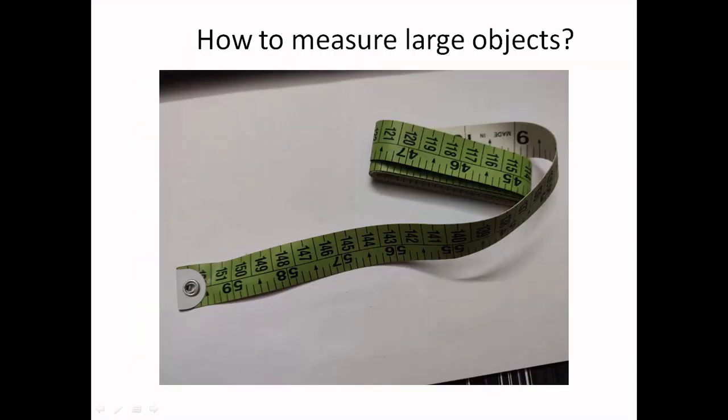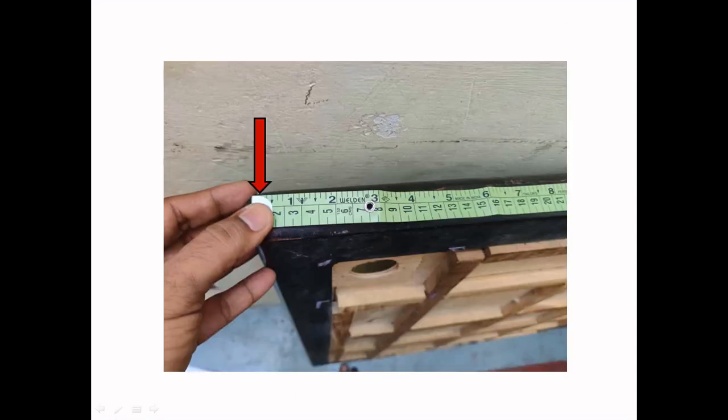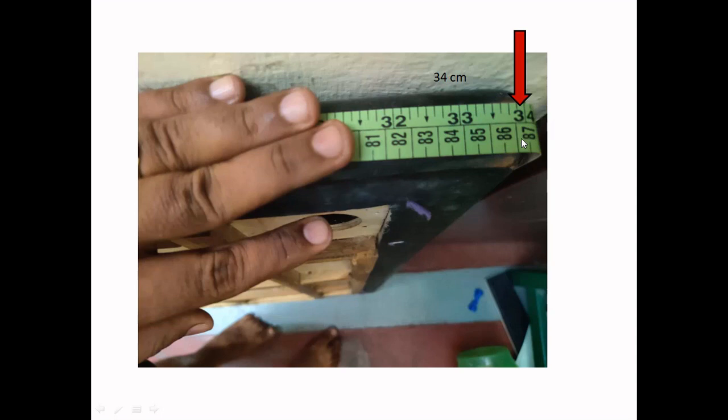How to measure a large object? We need to use this kind of tape for measuring large objects. So the same way I am going to measure the caramble. The starting point is 0 here. So the end point is 34. It is showing. So it is 34 centimeters.